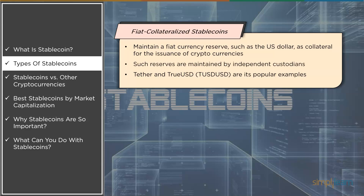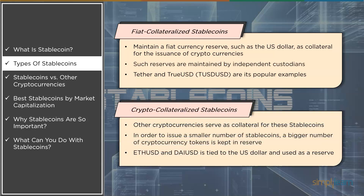Moving on to the next type: crypto-collateralized stablecoins. Stablecoins that are crypto-collateralized are backed by other cryptocurrencies. Because the reserve cryptocurrency may be volatile, such stablecoins are over-collateralized, meaning a larger number of cryptocurrency tokens are kept as a reserve for releasing a smaller number of stablecoins.